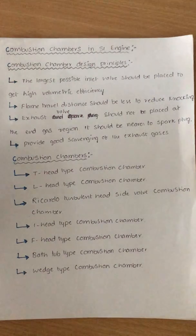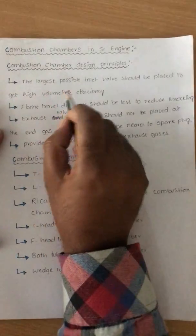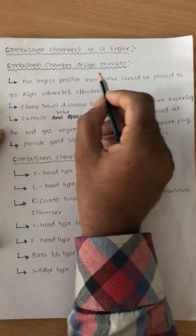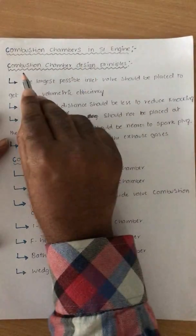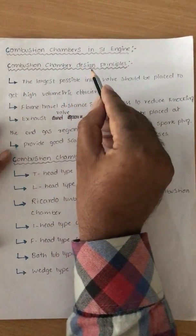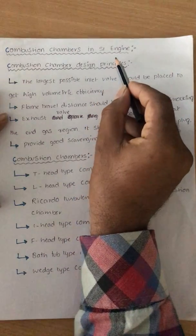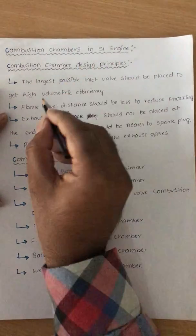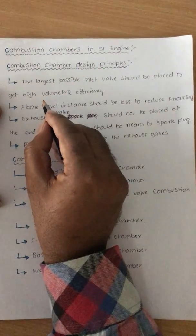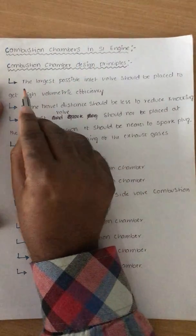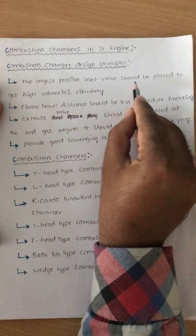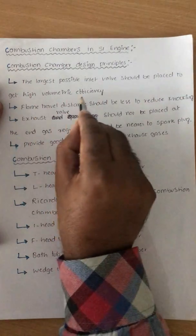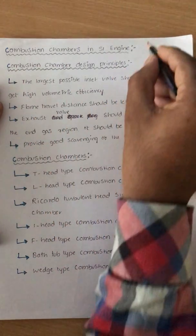First of all, we should think about what are the principles that we need to take care while designing the combustion chamber of an SI engine. The first point is: the largest possible inlet valve should be placed to get high volumetric efficiency.